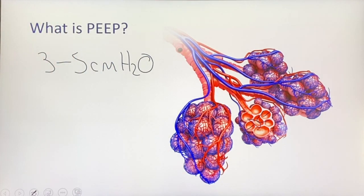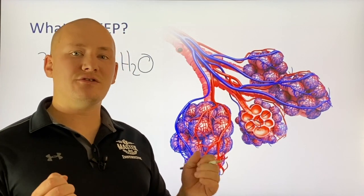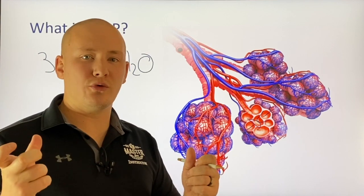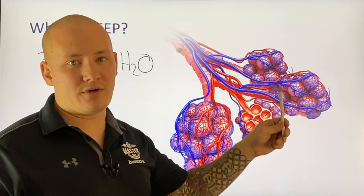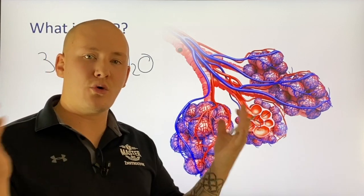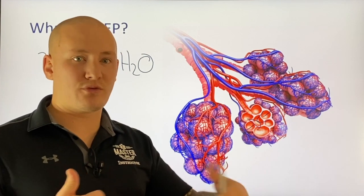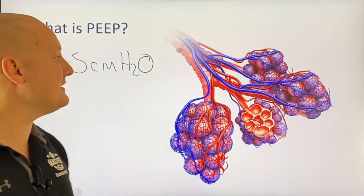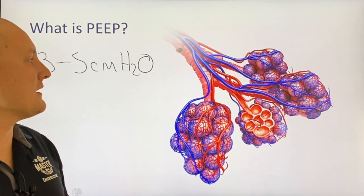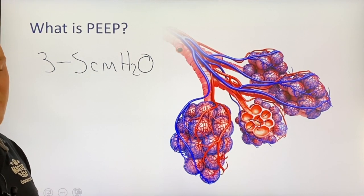The next benefit is that PEEP keeps the alveoli from repetitively opening and closing. When a respiratory distress patient can't maintain physiological PEEP, the alveoli tend to open and close rather than staying open, and the PEEP valve prevents that during inspiration and expiration. This is a big deal — we believe it reduces the risk of ventilator-associated pneumonia down the line, which makes keeping those alveoli from opening and closing on a consistent basis very significant.